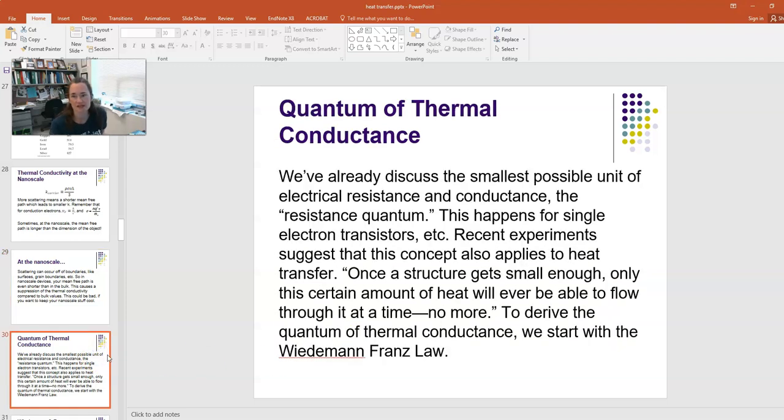We've already discussed the smallest possible unit of electrical resistance and conductance. We called it the resistance quantum, or the conductance quantum, depending on which one we're talking about. And they're inverses of one another. We discussed this in the context of single electron transistors and things like that. Recent experiments also suggest that this concept applies to heat transfer. To quote, once the structure gets small enough, only this certain amount of heat will ever be able to flow through it at a time, and no more. We're going to derive what is called this quantum of thermal conductance, and to do so, we're going to start with the Wiedemann-Franz law.